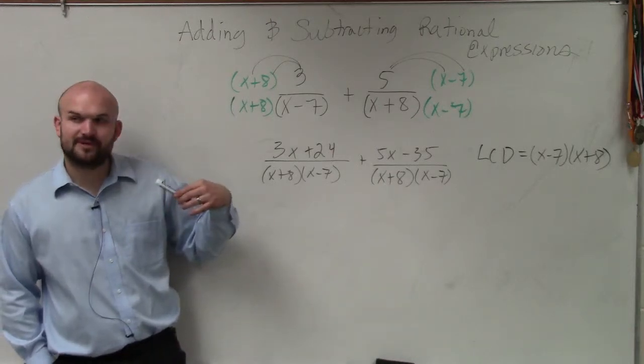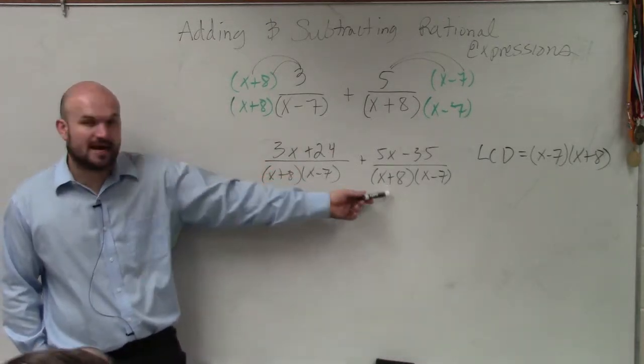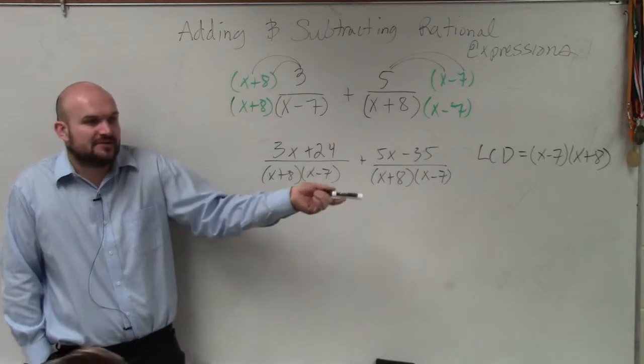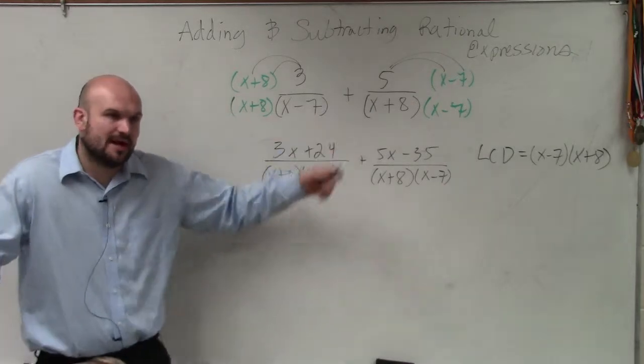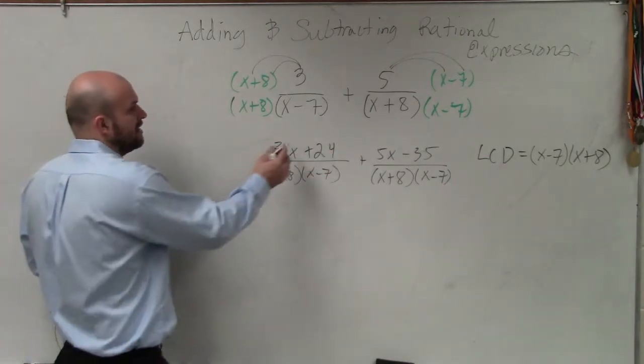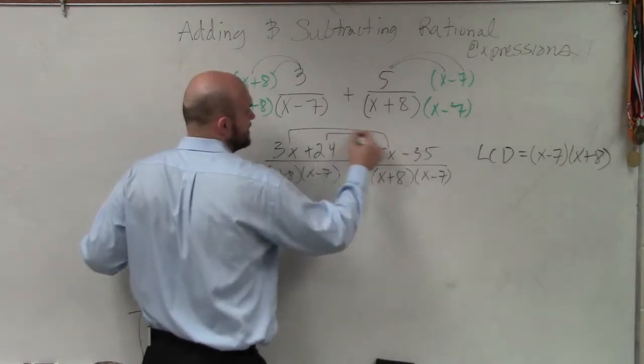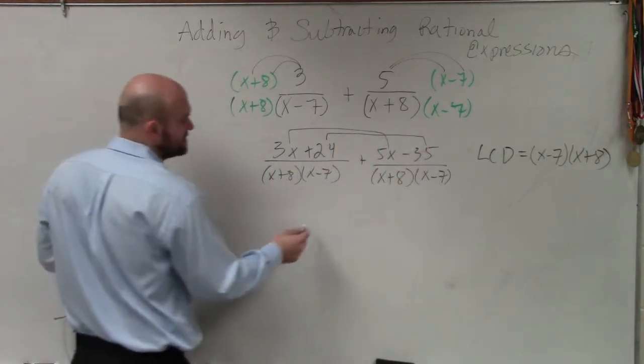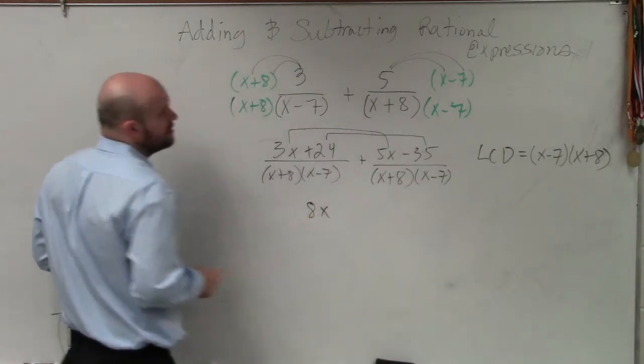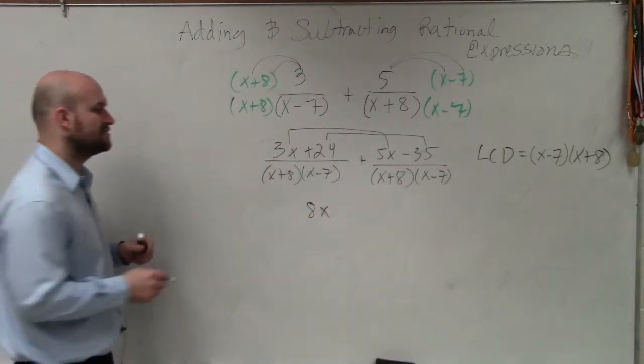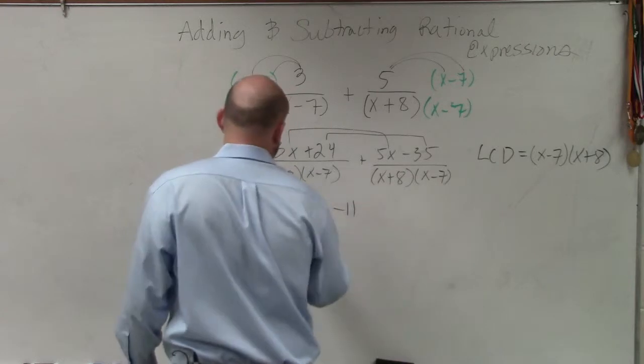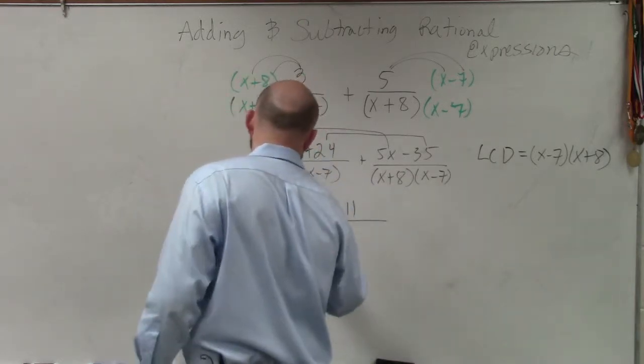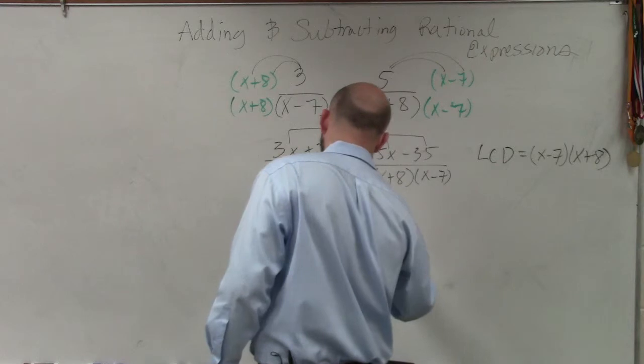So now, what we simply do is, since we have common denominators, when you're adding fractions as common denominators, you simply just combine your numerator. So therefore, I have 3x plus 5x and 24 plus a negative 35. So 5x plus 3x is 8x. 24 minus 35 is going to be a negative 11. So that's all divided by x plus 8 times x minus 7.